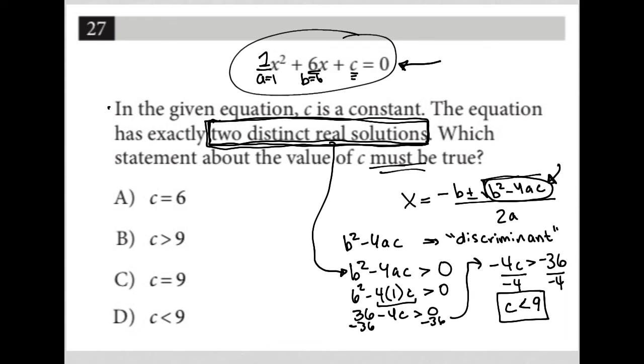C must be less than 9 in order for us to have two distinct real solutions. And therefore, the correct answer here is choice D.